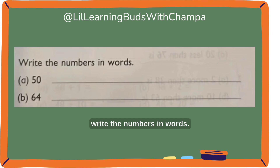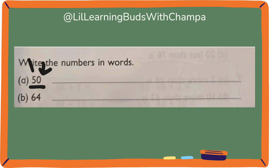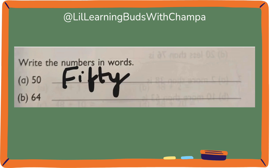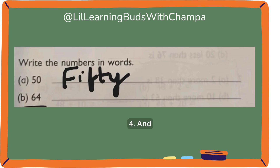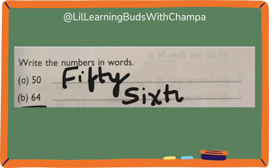Write the numbers in words. The first one is 50. The ones place has 0 and the tens place has 5. So it's 50 — F-I-F-T-Y. What's in the ones place? And what's in the tens place? 6. So it is 64. Let's write here: 64.